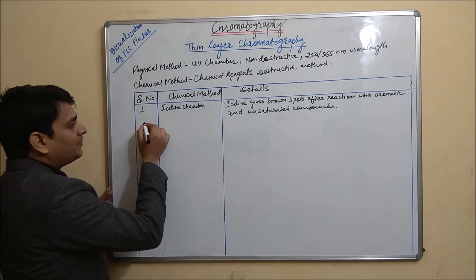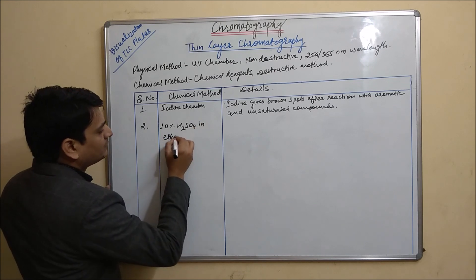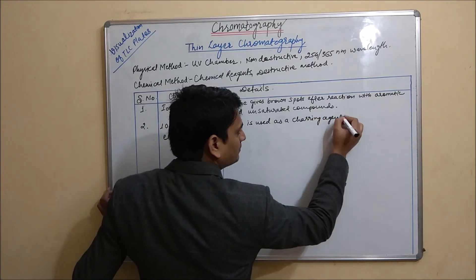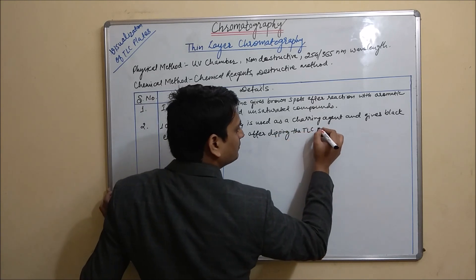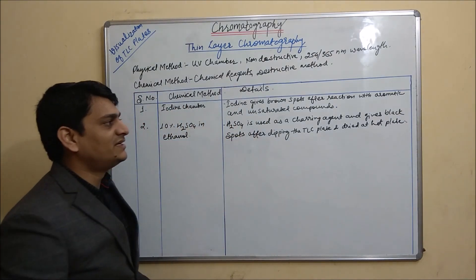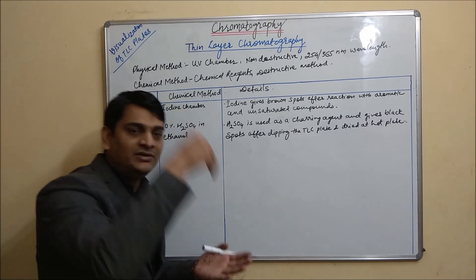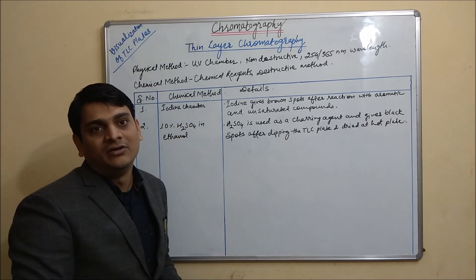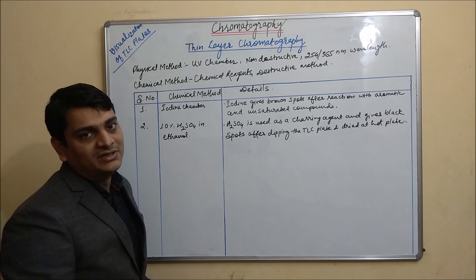Now coming to the second one which is 10% H2SO4 in ethanol. H2SO4 is used as a charring agent and it gives black spots for all types of compounds. After dipping into the solution, the TLC plate is heated or dried on a hot plate or oven. It will give black color spots for all the compounds, so it is used for every compound.